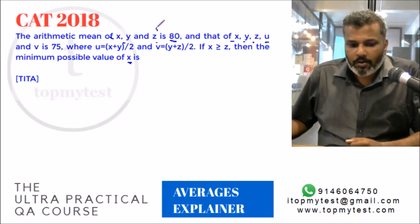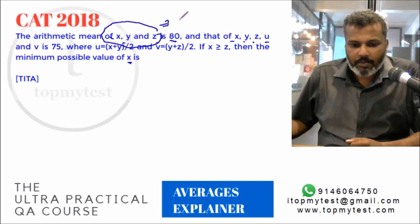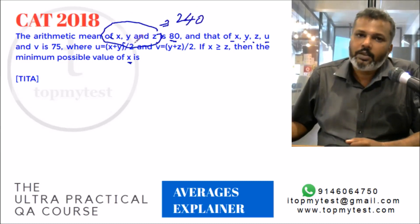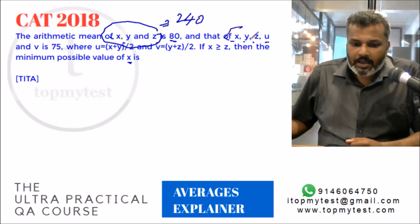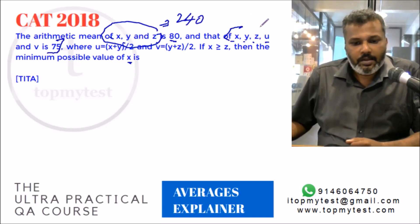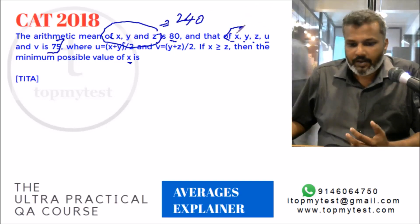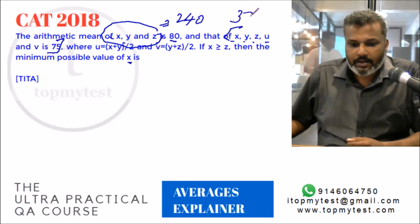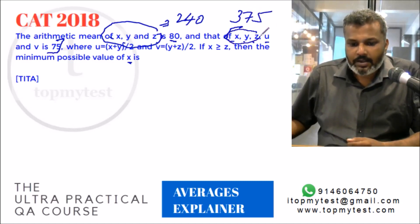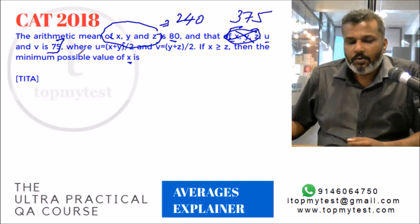x, y, z average is 80 so they add up to 240. x, y, z, u, v average is 75 with five observations, so they add up to 375. Taking out x + y + z = 240, u and v must add up to 135.